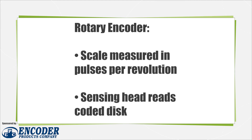In contrast, a rotary encoder measures resolution in pulses per revolution. Similar to linear encoders, a typical rotary encoder contains an internal coated disc and a sensing head. Think of a linear encoder as a type of tape measure, while a rotary encoder is more like a measuring wheel.